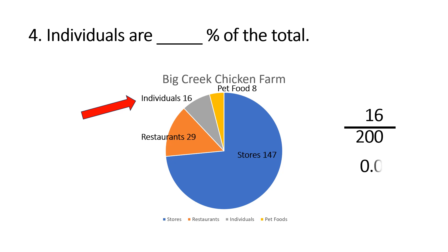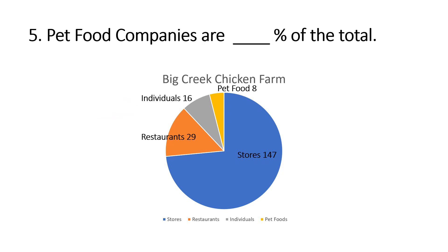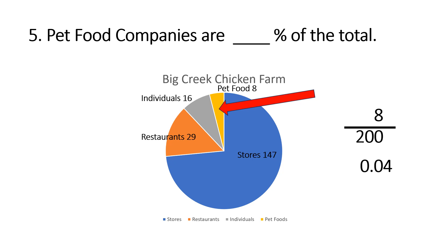We get 0.08 — move the decimal over twice and it's going to be 8%. And pet food companies are what percent of the total? Pet foods are 8 clients, so we take 8 divided by 200 — the total number of clients — and we get 0.04. Move the decimal over twice and we get 4%.